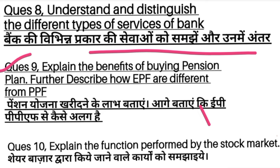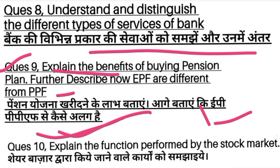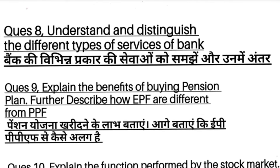Question number 9: Explain the benefits of buying a pension plan, and describe the difference between EPF and PPF. I'll tell you that you need to understand the pension and how EPF and PPF are different. Question number 10: Explain the functions performed by the stock market — understand the work in the share market.